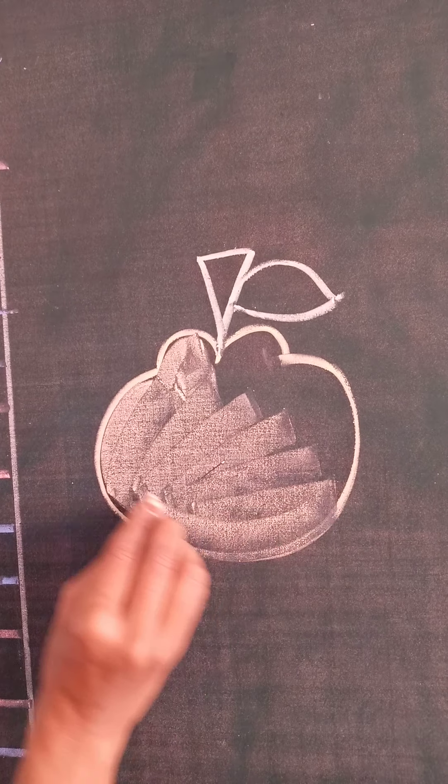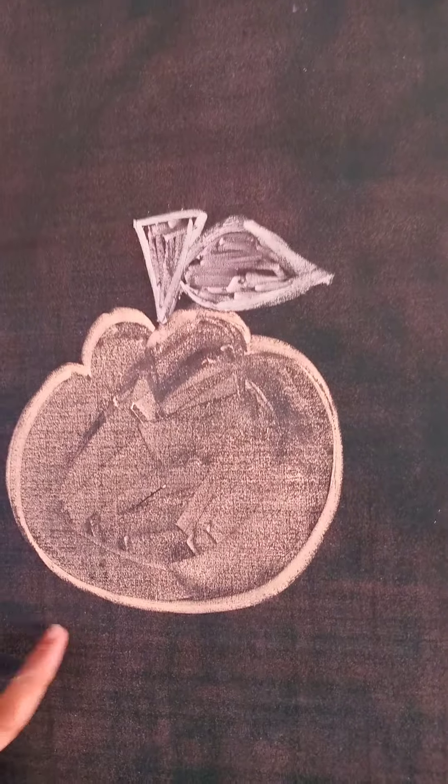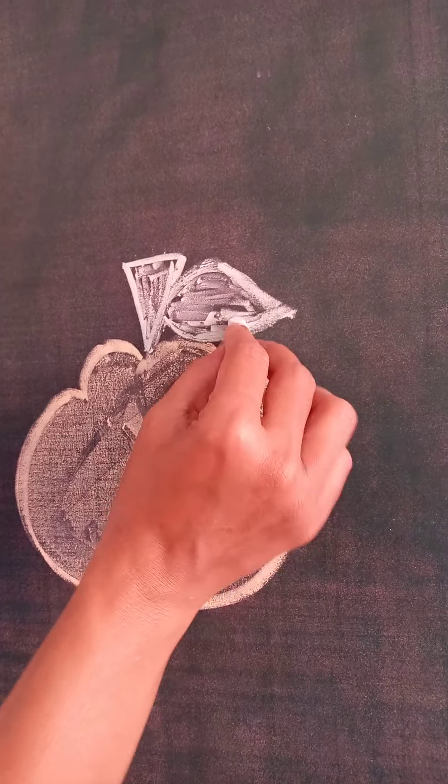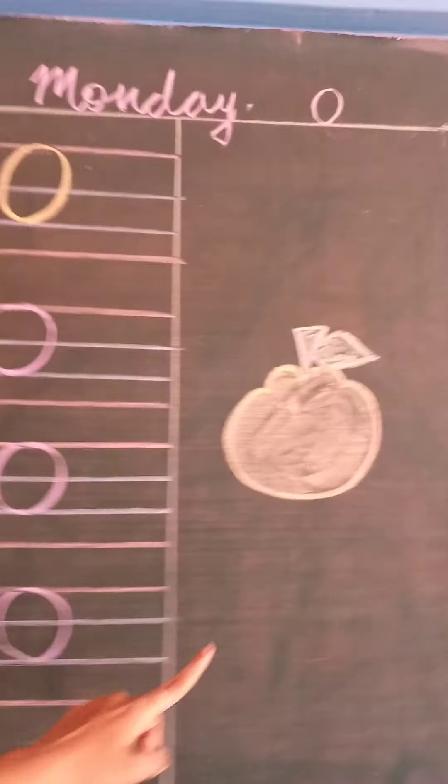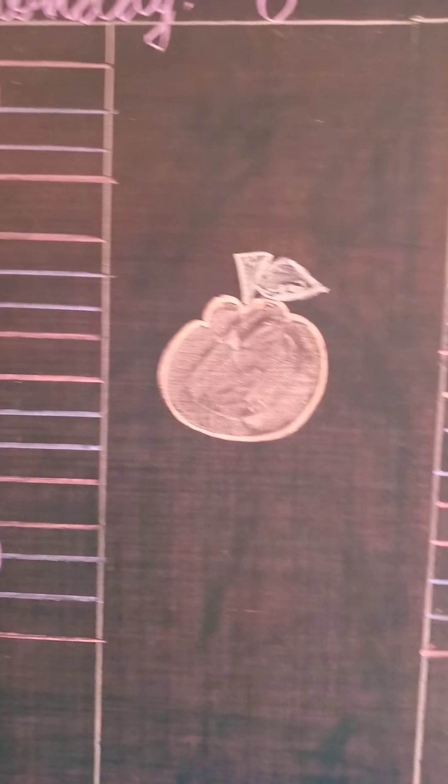Now we will do the coloring of orange. We will do orange color over here. Do the dark, dark coloring. So, like this, my dear students, you will do dark, dark coloring in orange and you will do green color in its leaf and stem. Do the page of O and draw the picture of O.